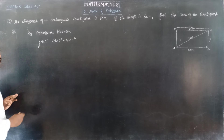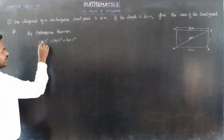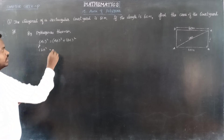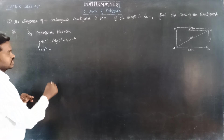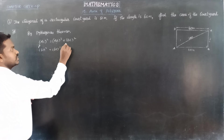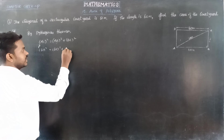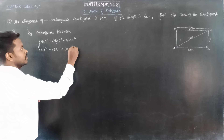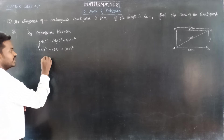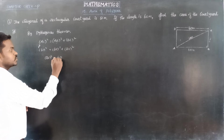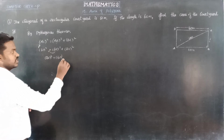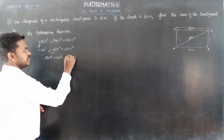AC is the diagonal of the rectangle, that is 61. So 61² = AB² + BC². AB is one side, which is 60, so 60² + BC². Therefore BC² = 61² − 60².